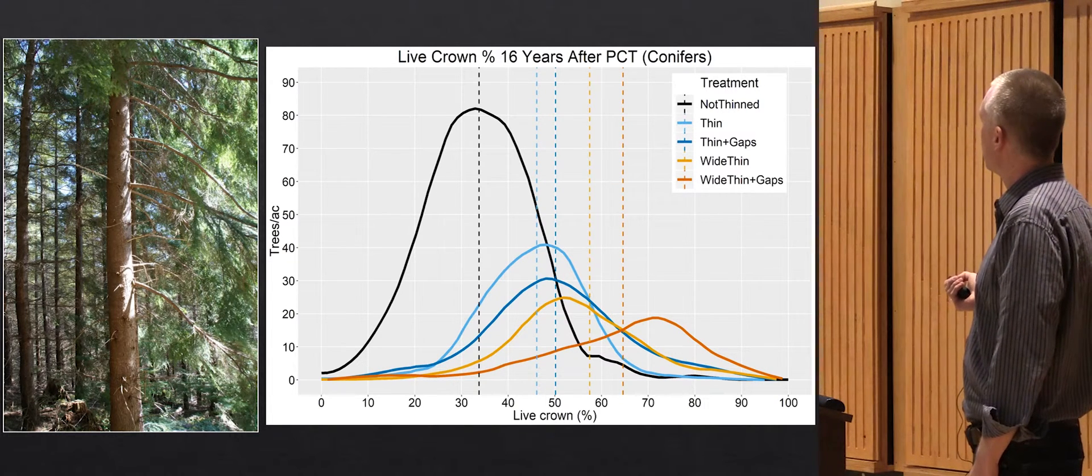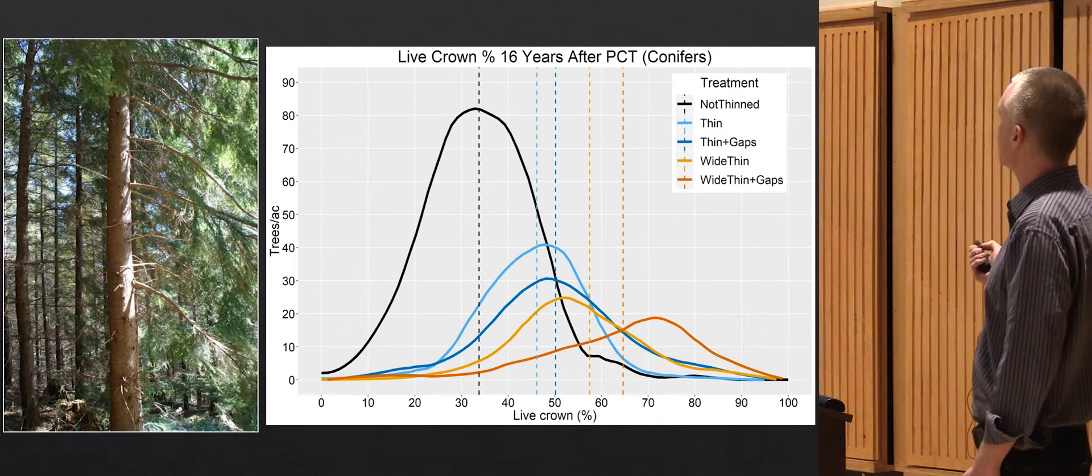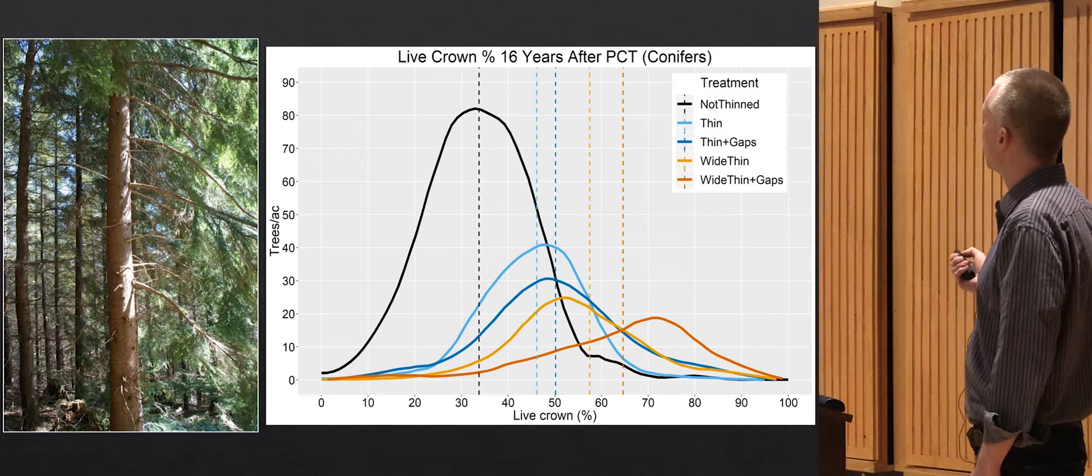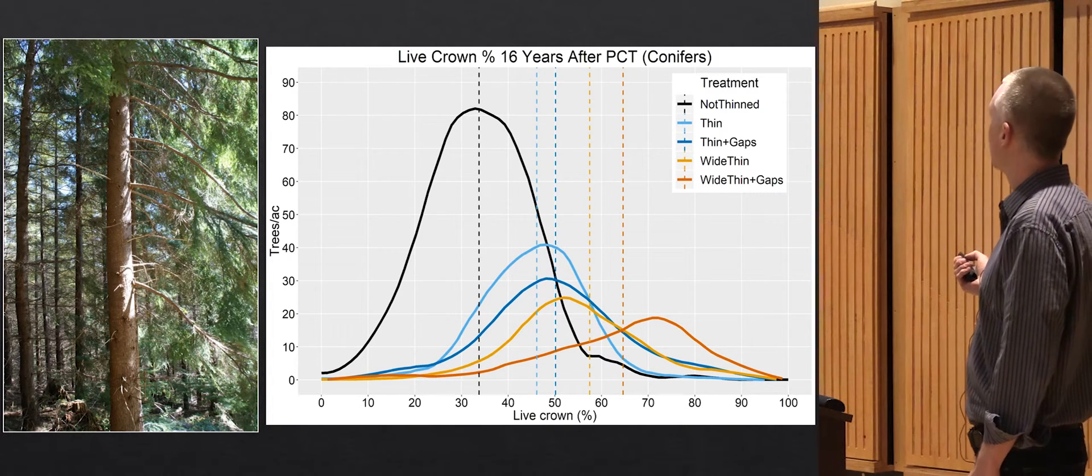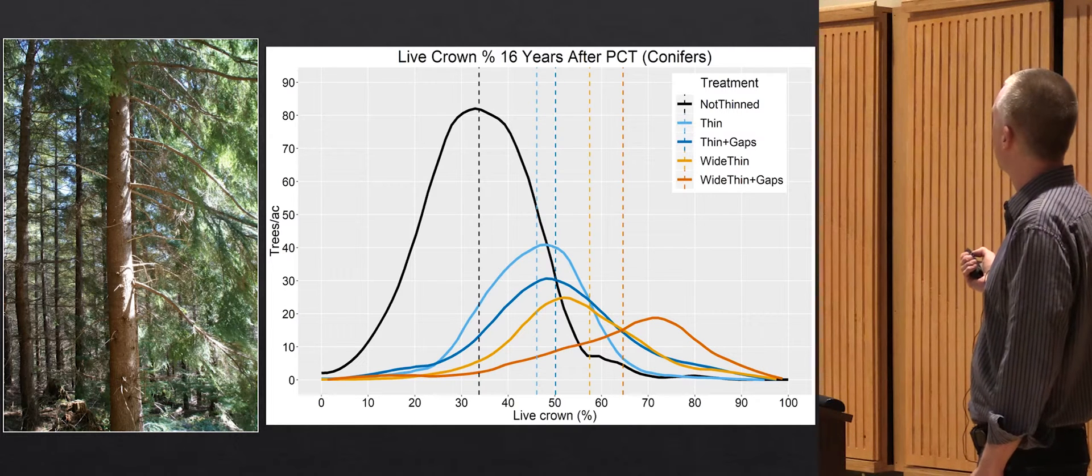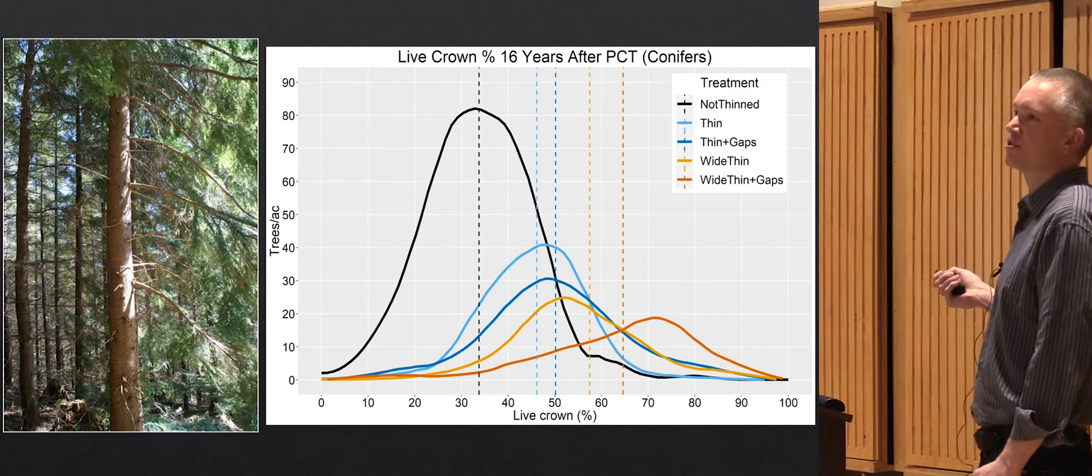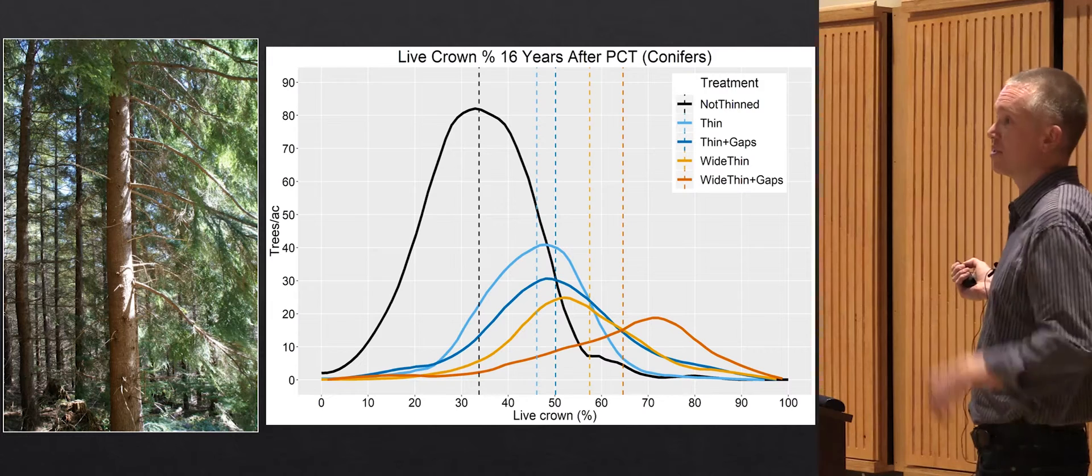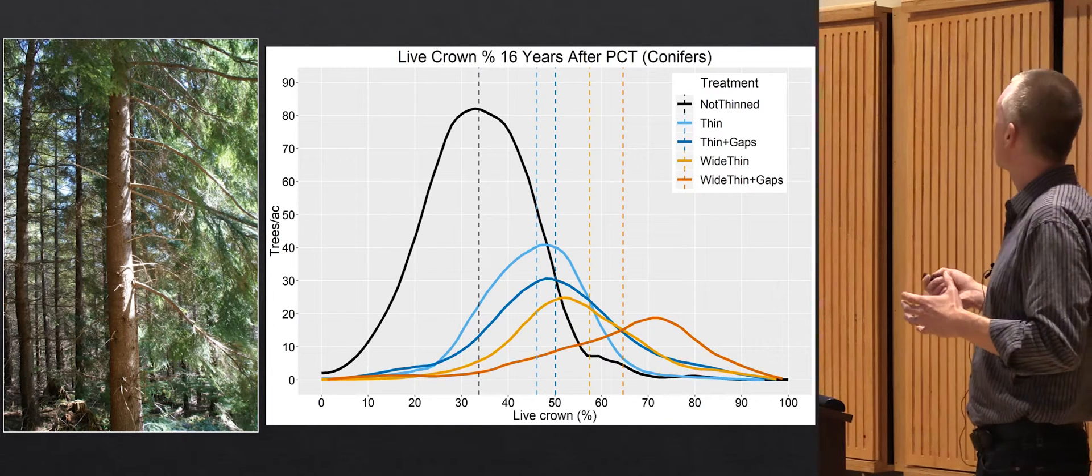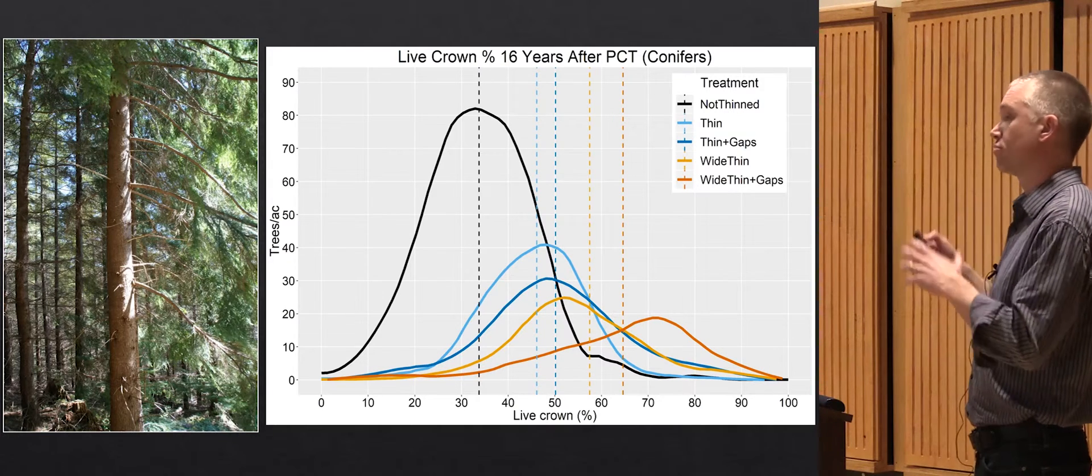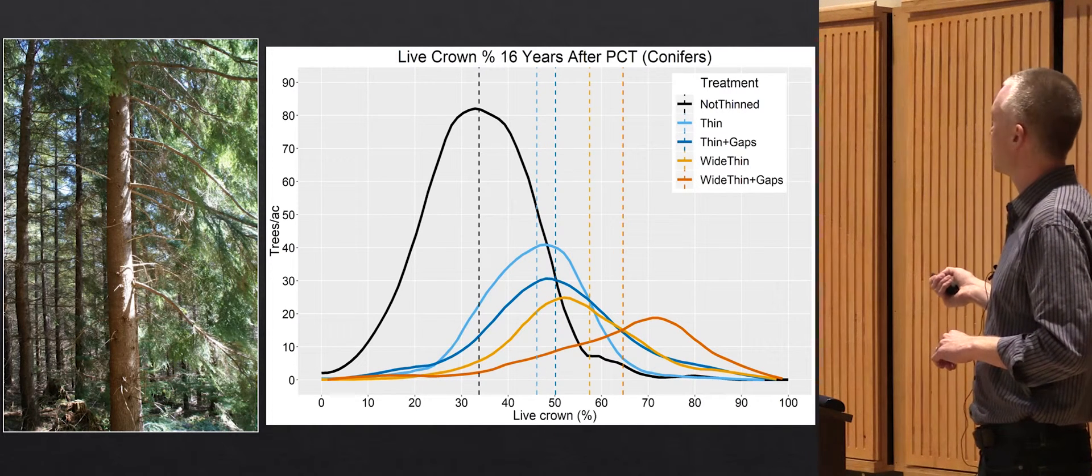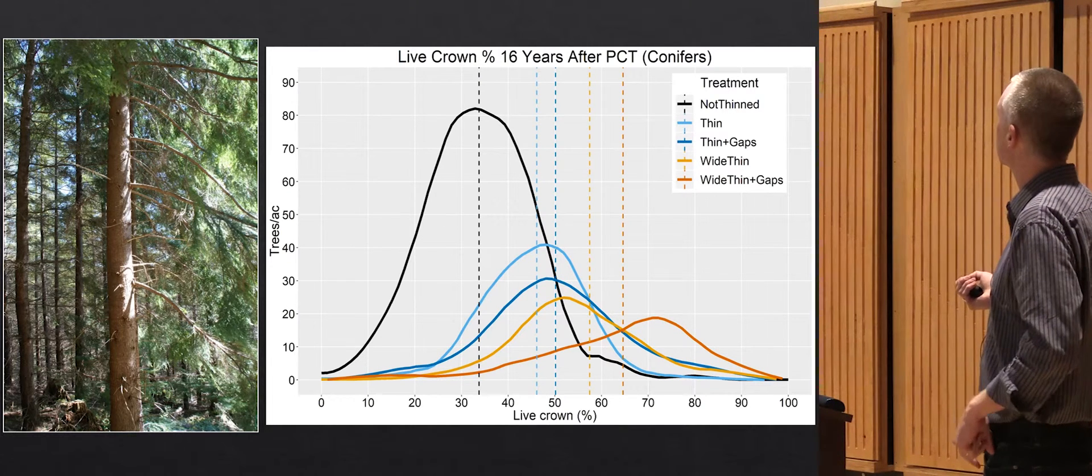This graph is quite similar in shape to that last graph I showed with diameter distributions. Here you have in the unthinned control treatment this sort of shape, and as you remove more trees, the trees all have longer live crowns. Getting to the most extreme case where there were 170 trees left per acre in this wide thin plus gaps, you've really got some crowns going almost all the way down to the ground. You've got 80 and 90 percent crown on some of those trees, crowns reaching almost down to the ground. There's some benefits of having a longer crown. That's basically where your diameter growth comes from. If you have more branches, that's correlated with the root system, so a larger crown is usually a more wind firm tree. But of course the negative is when you have branches persisting all the way down to the ground, that's going to affect wood quality on those trees. It's kind of a trade-off.